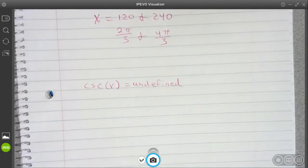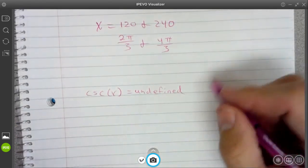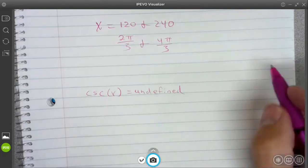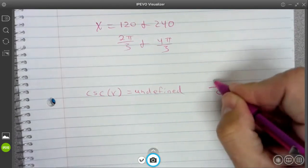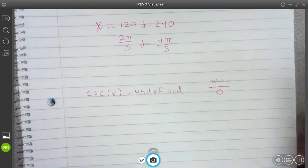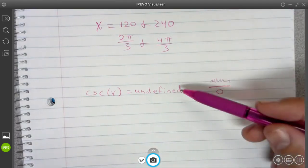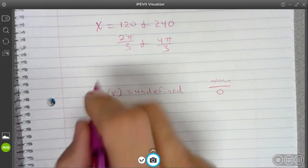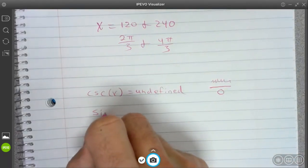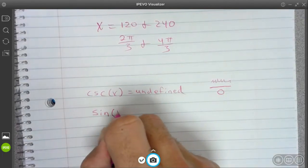For cosecant, cosecant is equal to something that is undefined. So the times where you get something that is undefined is whenever you have a division by 0. I don't know what the top is. It's supposed to be a number. But any time that you get something undefined usually happens when you divide by 0.